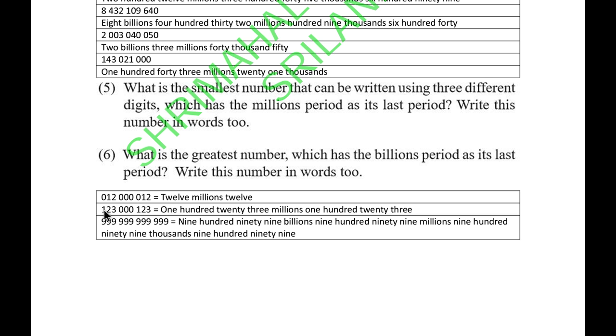Or you can guess another number if they're not satisfied with this - you can write 123,000,123. The last also repeats the same. You can even consider 0 as a digit too. If the teacher is not looking for that 0, you can write this.